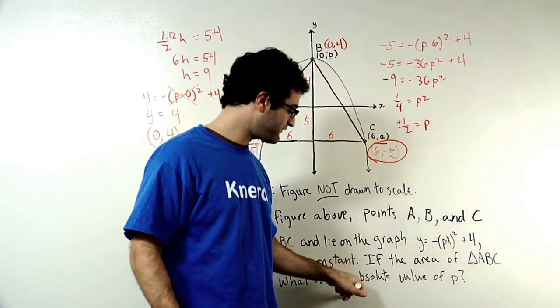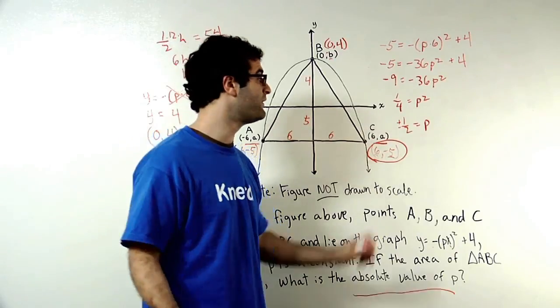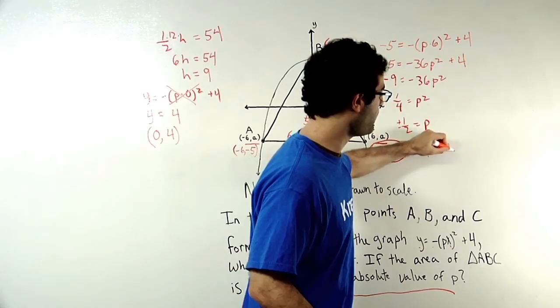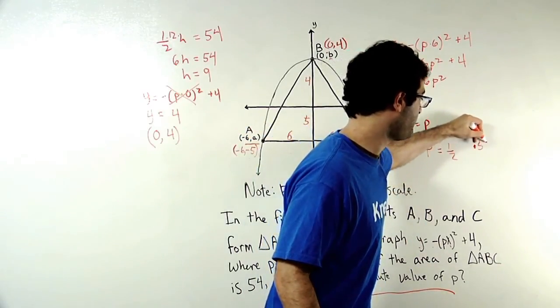And since I'm asked for the absolute value of P, I'm not asked for the value of P, I'm asked for the absolute value, I know that it's going to have to be positive. So P equals one half. Or if you're writing on your grid in, you could write it as 0.5.